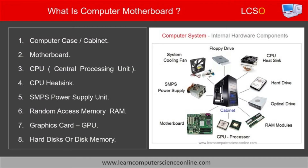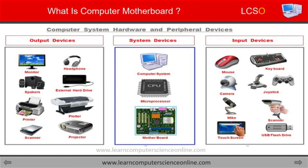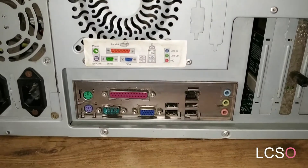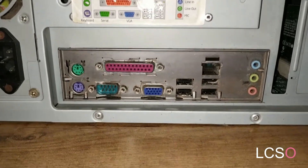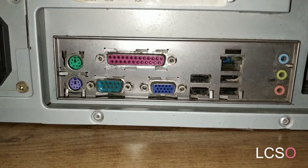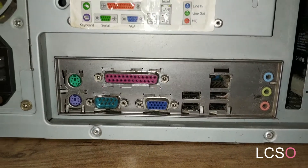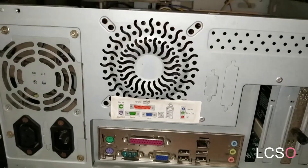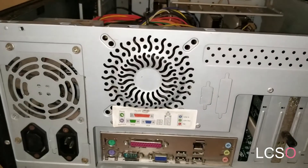The motherboard connects both internal hardware components placed inside the computer system case, and external peripheral devices that are connected externally to the computer. The peripheral devices are connected to the computer through a motherboard interface panel that is visible from the rear side of the computer case. Different hardware components are installed on the specific ports provided on the motherboard.